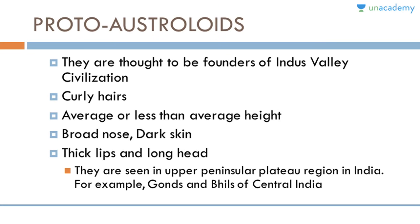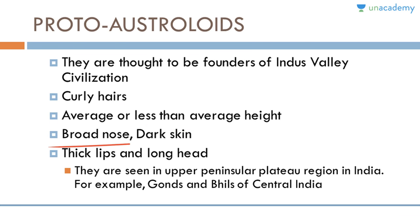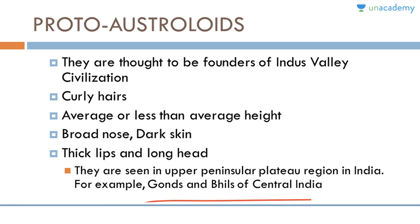Proto-Australoids are thought to be the founders of the Indus Valley civilization. They have curly hair, average or less than average height, broad nose, dark skin, thick lips, and a long head. People of this race are seen in the Upper Peninsular Plateau region in India, and examples of their tribes include the Gonds and the Bhils of Central India.